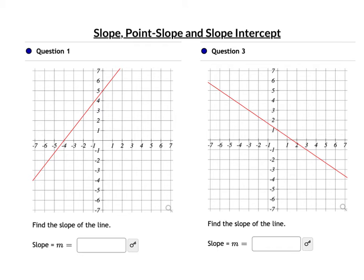The remainder of the video covers assignment questions. Question 1: find the slope of the line. Pick two points at grid intersections — here (0, 5) and (−4, 0). Count the rise: 1, 2, 3, 4, 5 — rise is 5. Count the run: 1, 2, 3, 4 — run is 4. Both positive, so the slope is 5/4.